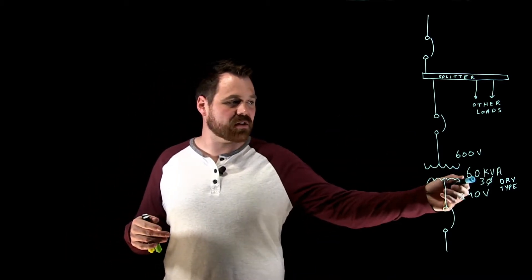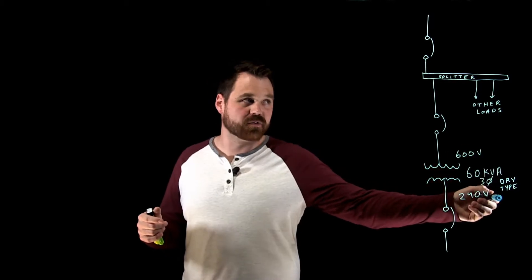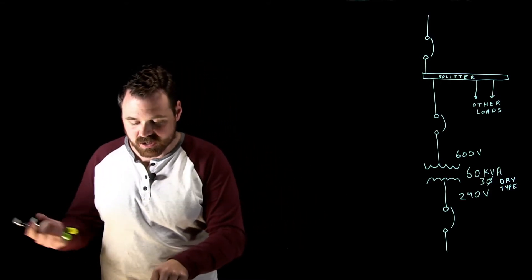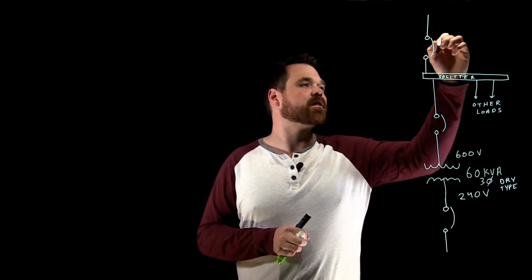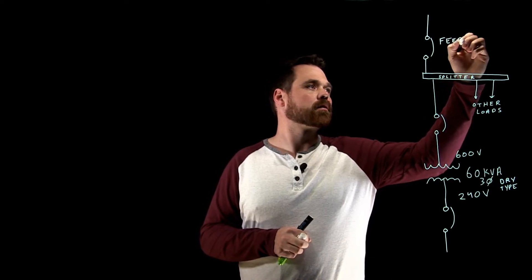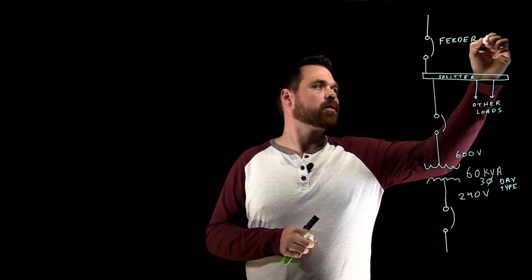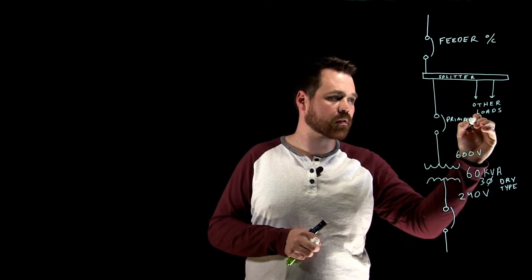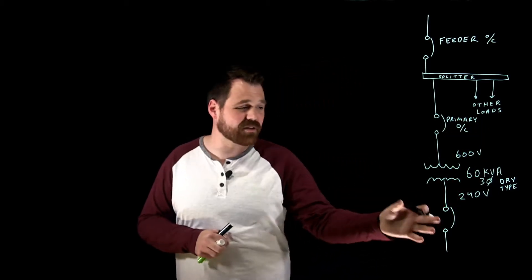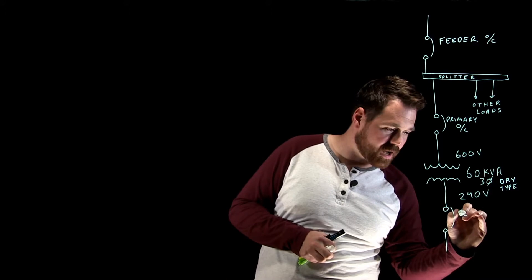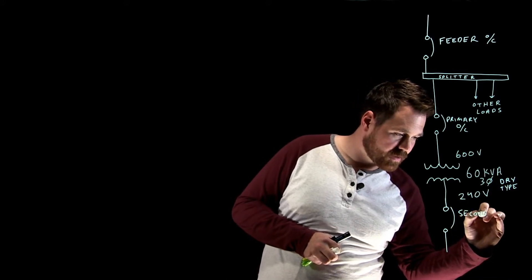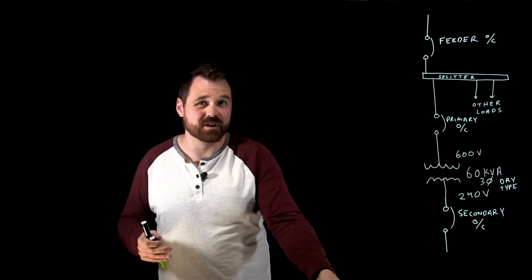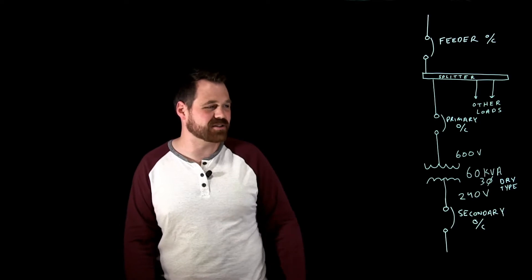I've got as an example the 60 kVA three phase dry type 600 to 240 volt transformer and I've got it drawn into a system where I have a main, a feeder OC up here, this is our primary OC, and then down here I've drawn in a secondary OC but you're not always going to install these secondary OCs.